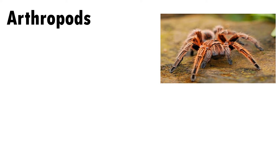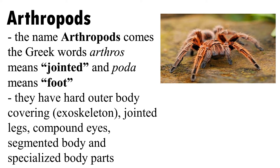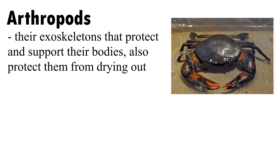Arthropods — the name comes from the Greek words 'arthros,' meaning jointed, and 'poda,' meaning foot. They have a hard outer body covering, jointed legs, compound eyes, a segmented body, and specialized body parts. Their exoskeletons protect and support their bodies and also protect them from drying out.